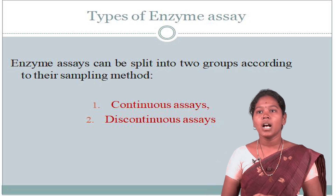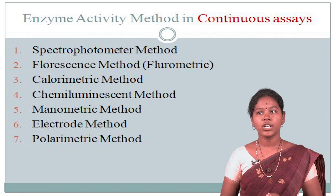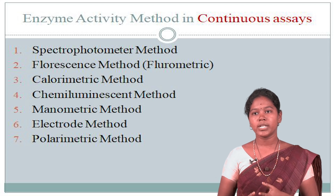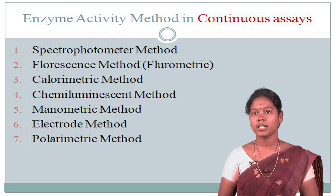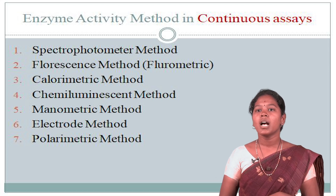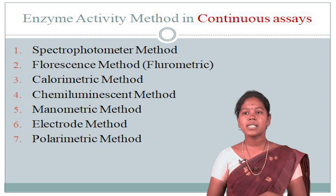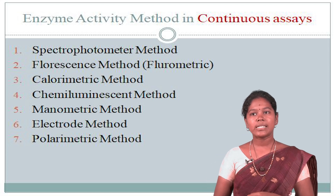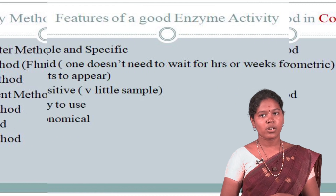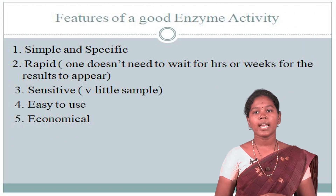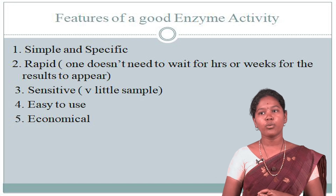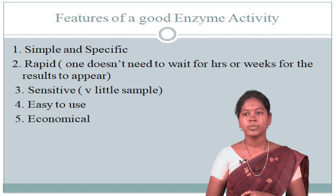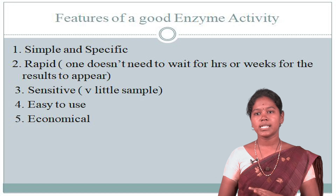Continuous assays are divided into seven types: first, spectrophotometric methods; second, fluorescence or fluorometric methods; third, calorimetric methods; fourth, chemiluminescent methods; fifth, manometric methods; sixth, electrode methods; and seventh, polarimetric methods. Features of a good enzyme assay: first, it is simple and very specific; second, it is rapid — one does not need to wait hours or weeks for results; third, it is very sensitive, requiring only a little sample; fourth, it is easy to use; and fifth, it is very economical.